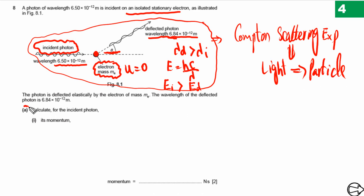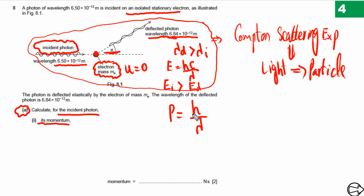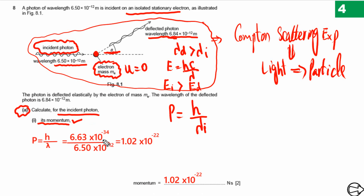Now let's answer Part A. We need to calculate the momentum of the incident photon. Momentum is simply equal to h over lambda, where h is Planck's constant (found in the data table) and lambda is the wavelength of the incident photon. We plug in the values of Planck's constant and wavelength, and here is our final answer.